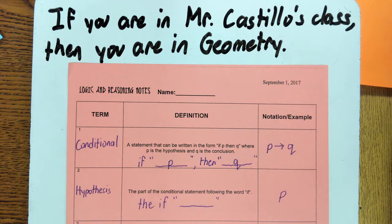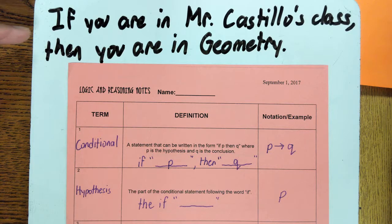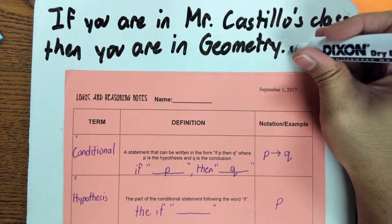If you are sitting in one of my classes, then you are in a geometry class. When you look at conditional statements, we look to see whether these statements are true or false. As an aside, all of my classes are geometry classes. So if you are in Mr. Castillo's class — if you are sitting in one of my classes — then you are in a geometry class. Think about that for a few seconds. This statement is a true statement, because all of my classes are geometry. So we say this is true.